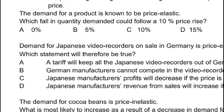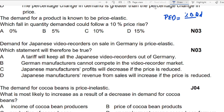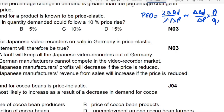The topic is price elasticity of demand (PED), which measures the responsiveness of quantity demanded to a change in price. PED is calculated using the formula: percentage change in quantity demanded divided by percentage change in price. An alternative formula is: change in quantity demanded over change in price, multiplied by P1 over Q1. Both formulas give exactly the same answer.